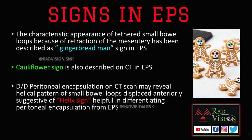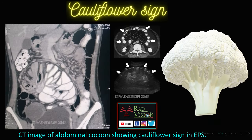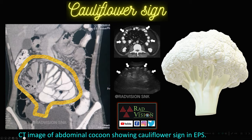When there is clustering of bowel loops surrounded by a fibrocollagenous membrane, it mimics a cauliflower. On CT, multiple bowel loops are attached to the mesentery by a narrow base, and on ultrasound, the same multiple bowel loops attached to the mesentery mimic the cauliflower sign in EPS.